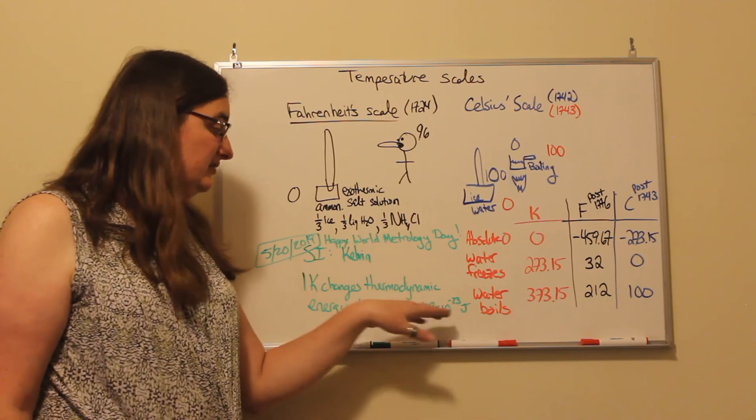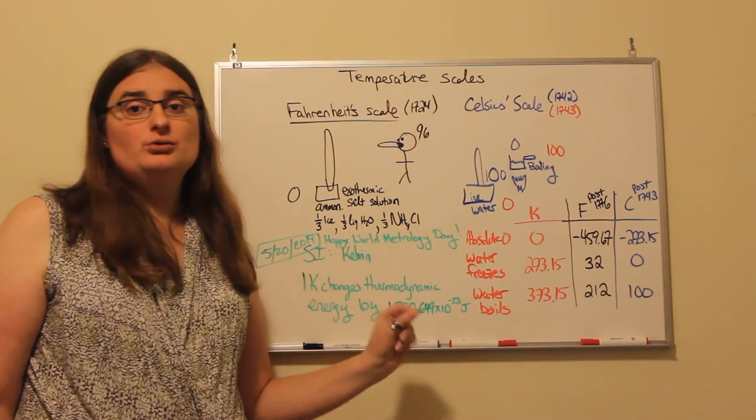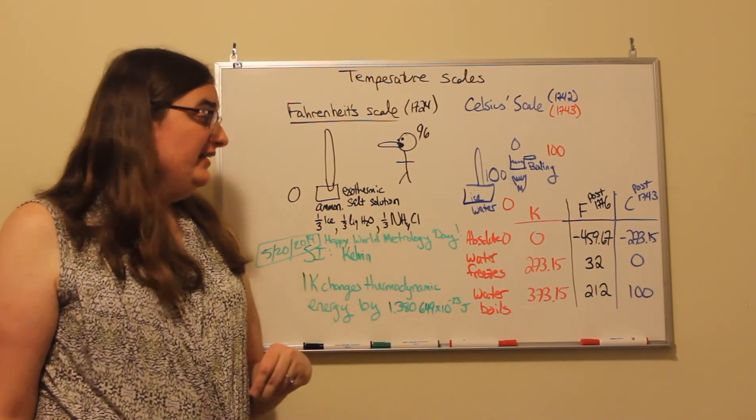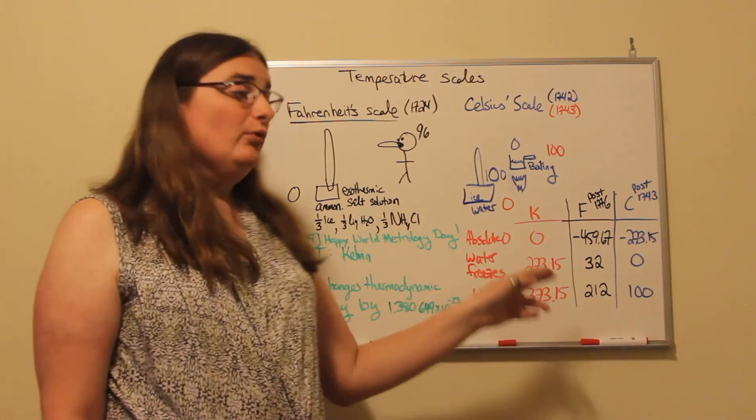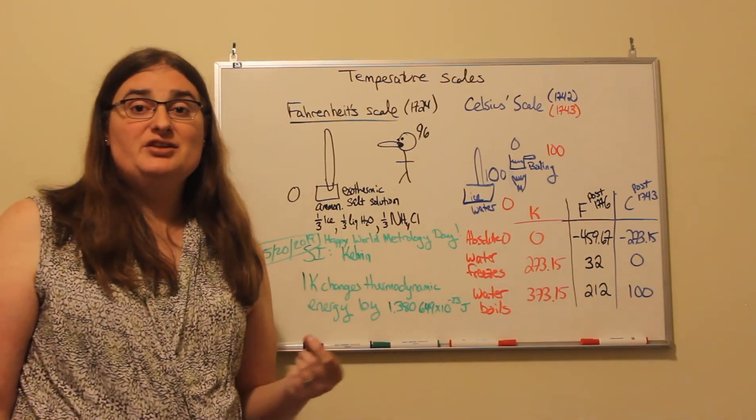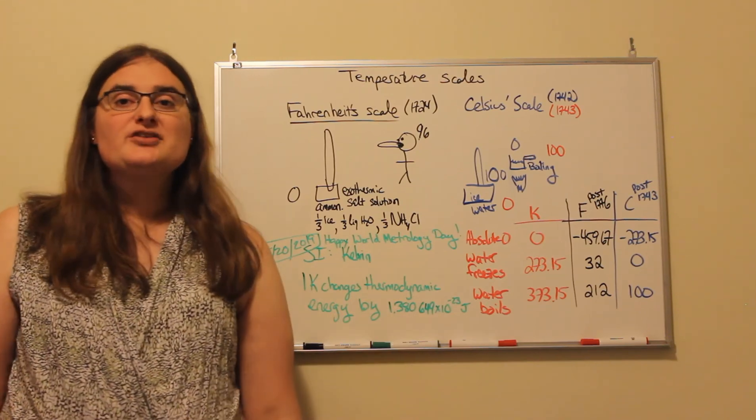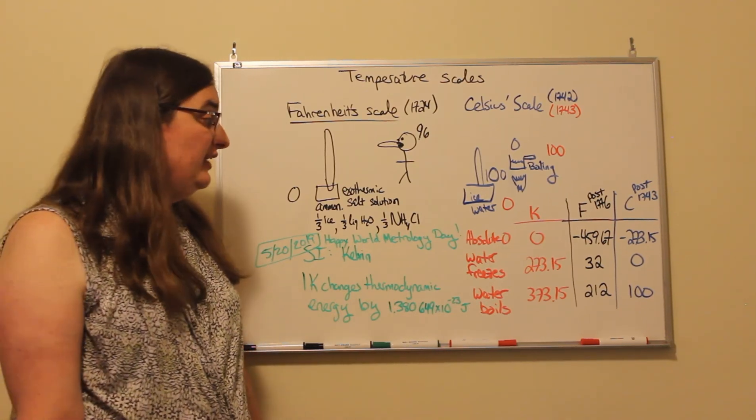a Kelvin was defined as the thermodynamic energy change of 1.380649 times 10 to the negative 23 joules. At the limits of our ability to assess that energy, that means water freezes at 273.15 Kelvin and water boils at 373.15 Kelvin.